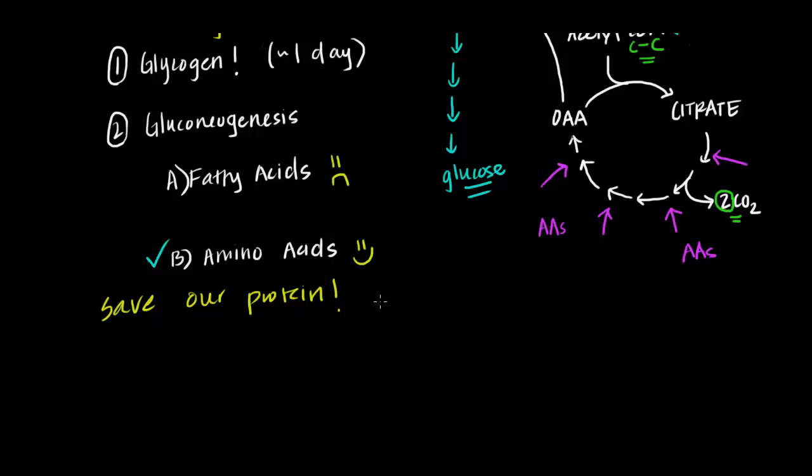They start using a different fuel that our body switches to making several days after starvation called ketones. And for the brain in particular, these ketones are effective unlike fatty acids, because these ketones are water soluble enough to cross the blood-brain barrier and allow us to produce ATP in times of starvation.